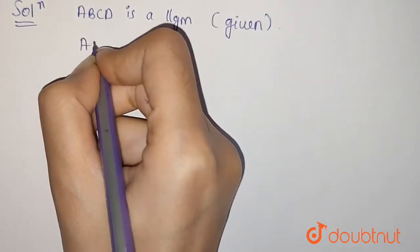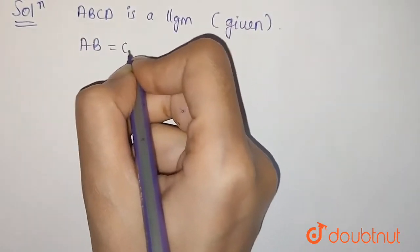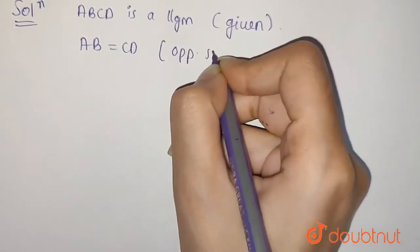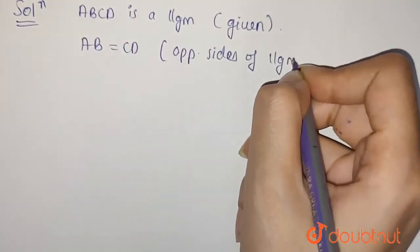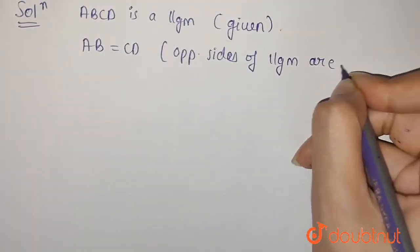So AB will be equal to CD as opposite sides of parallelogram are always equal.